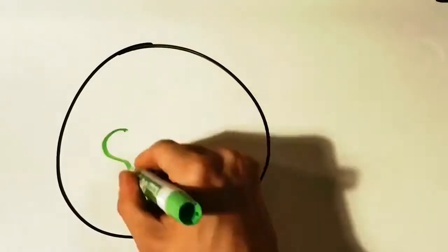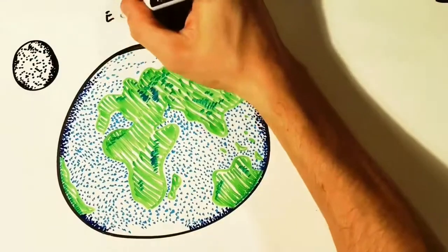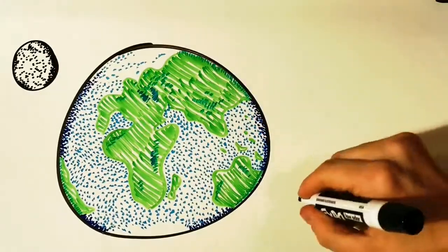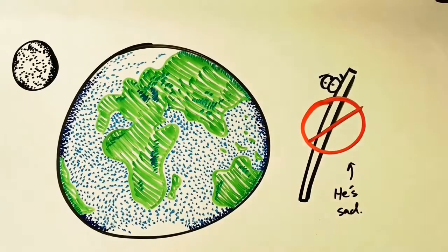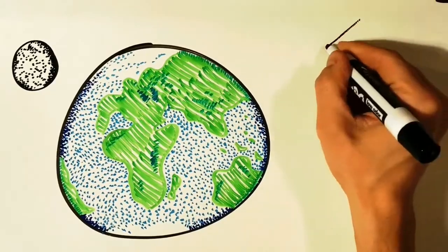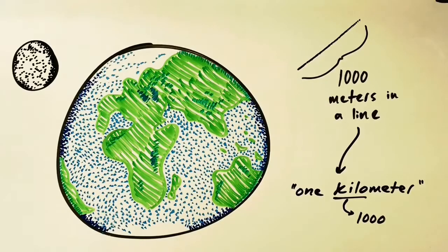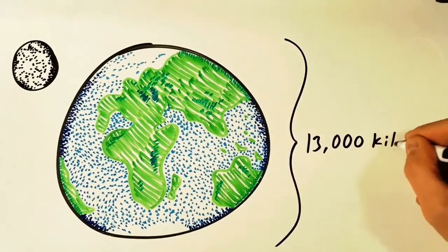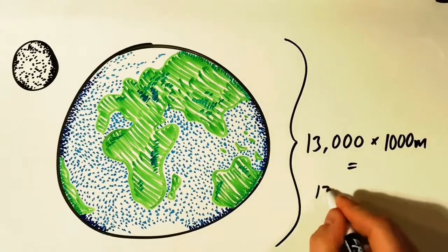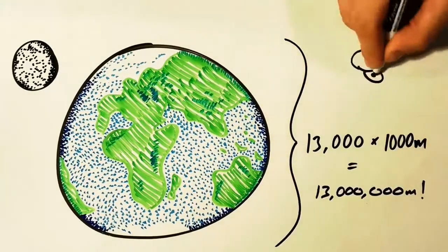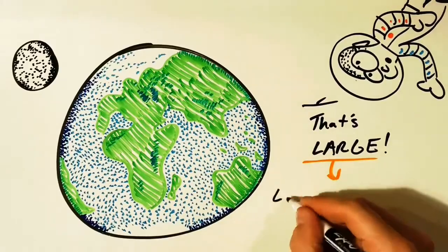What about something really big — something at the scale of the Earth? Our humble meter fails us here; it's just too small to describe something so big. But if we lined up a thousand meters end to end, that's called a kilometer. The planet Earth is about 13,000 kilometers across. Using the power of 10, multiplying 13,000 by a thousand meters gives us 13 million meters. There's a term we use to describe objects this big — it's called large.